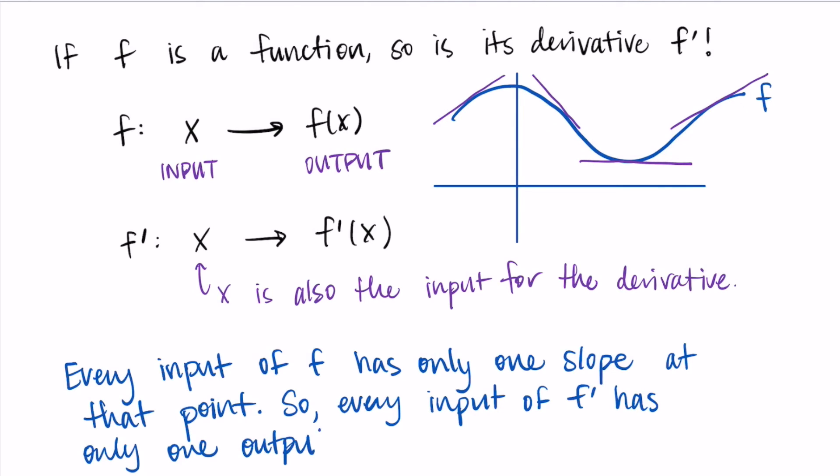Again, it isn't possible that an input of f prime would have two outputs because that would mean there was a point with two different slopes, and that's just not going to happen. Since each point on f has only one value, there is no way for that value to represent two different slopes at the same time.